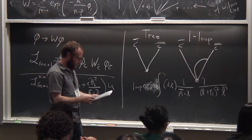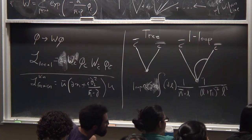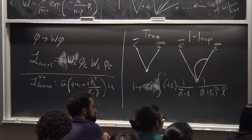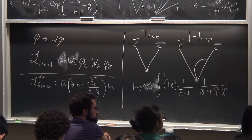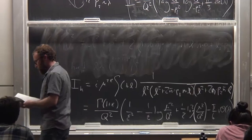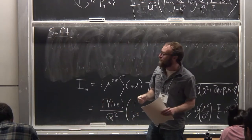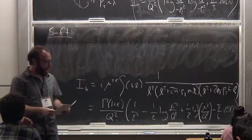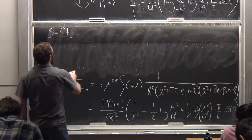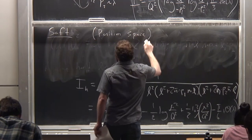We have about five minutes. I want to sketch where the soft integral comes from and say a couple of words about resummation, and then we can end. Those who want to stick around can discuss more. The soft sector is pretty subtle—I'm going to try to do a really careful job in my notes. For technical reasons I'll talk to friends to get some more intuition there.